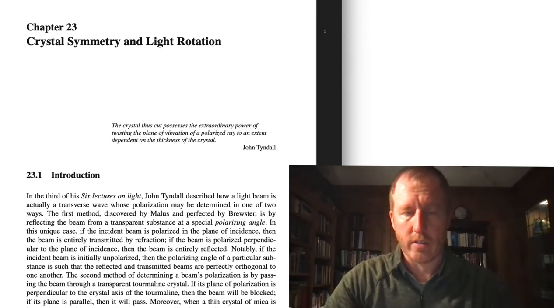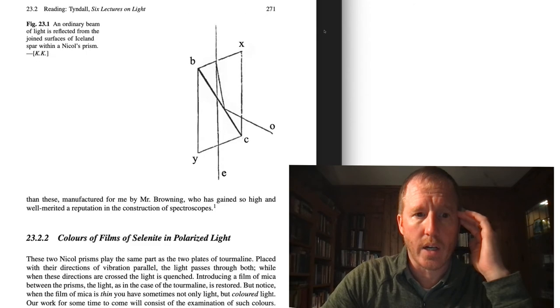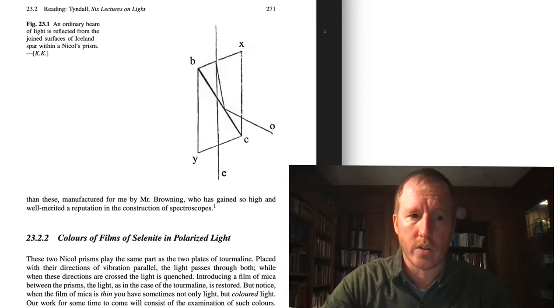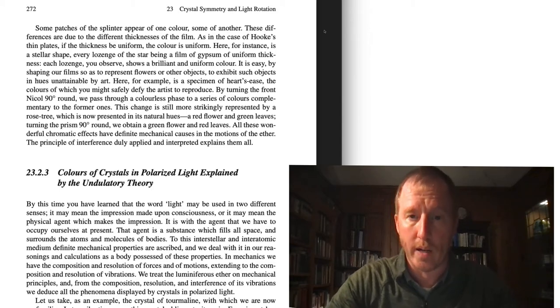In our last lecture, I talked quite a bit about his sections 23.2.2, where he talks about the colors of films of selenite in polarized light and the colors of crystals in polarized light explained by the undulatory or the wave theory.